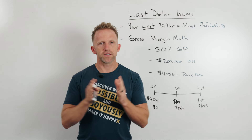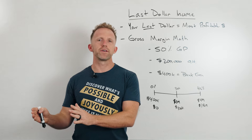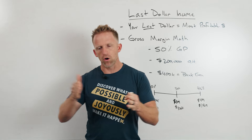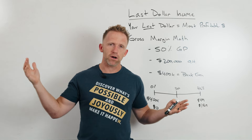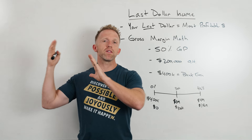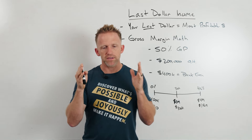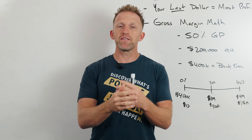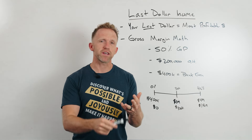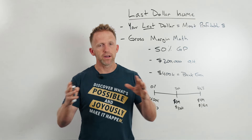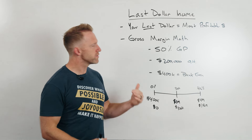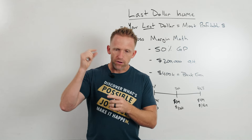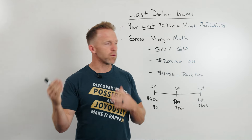Last dollar income, said simply, is the idea that your last dollar in your business is your most profitable dollar. You start your company at the beginning of the year and you're going to have some fixed overhead — some amount of money you're going to spend this year just to operate your business even if you do no revenue at all. You've got your office lease, your insurance, maybe some salaried employees not tied to your performance. All of these expenses make up your overhead. As you progress through the year, your last dollar becomes your most profitable dollar.